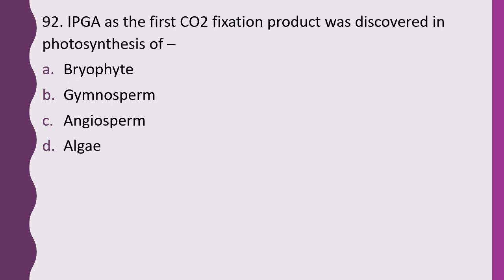Question 92. 3-PGA as the first carbon dioxide fixation product was discovered in photosynthesis of: bryophytes, gymnosperms, angiosperms, or algae. The correct answer is option D, algae.